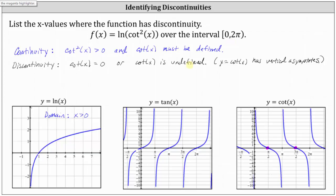And then cotangent x is undefined where we have vertical asymptotes, which occur at 0 radians, pi radians, and 2 pi radians. But 2 pi radians is not in the given interval. So now we know f of x has discontinuity at x equals 0, x equals pi over 2, x equals pi, and x equals 3 halves pi radians over the interval from 0 to 2 pi radians.